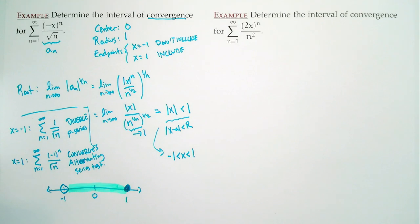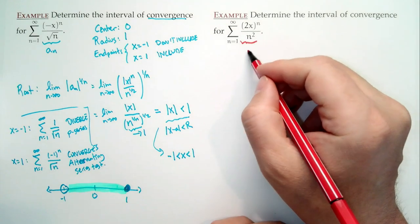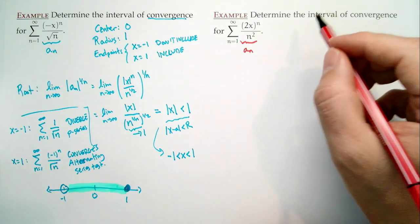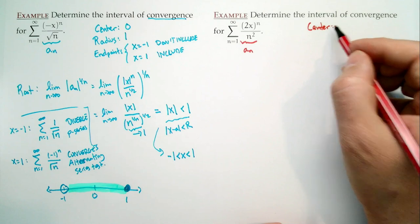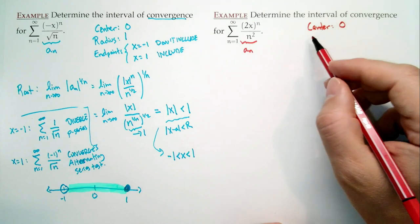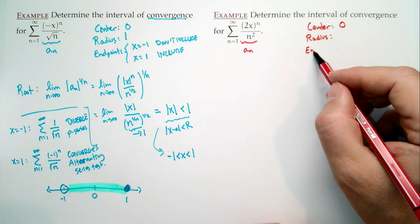So our interval of convergence: we have our number line, centered at 0, going to negative 1 and positive 1. We don't include negative 1 (open circle), but we do include 1 (closed circle), with everything in between. The interval notation is negative 1 < x ≤ 1. This is a half-open interval because we include one endpoint but not the other.